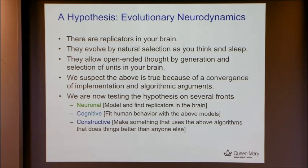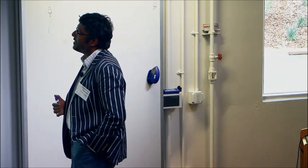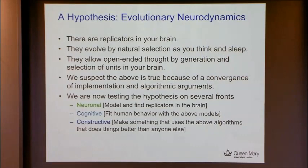We basically propose that there are replicators in your brain. This is very speculative, of course — it's a hypothesis and we're doing exploration in this. We propose that these replicators evolve by natural selection as you think and sleep, and that they allow open-ended thought by the generation and selection of units in your brain. We suspect it's true because of a convergence of implementation and algorithmic arguments, and we're testing this hypothesis in three domains of abstraction.